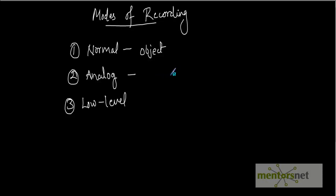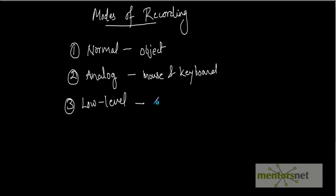The second is analog recording mode. This enables you to record the exact mouse and keyboard operations that you perform in relation to either the screen or the application. This recording mode works on mouse and keyboard movement. The third one is low level recording. In this recording, QTP records the exact position of the objects - it works on the coordinates of the object.